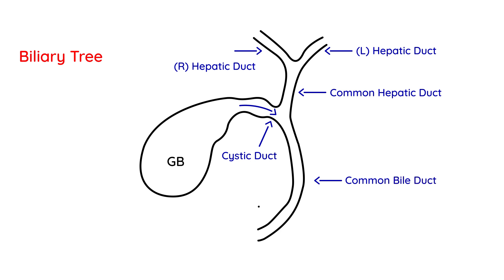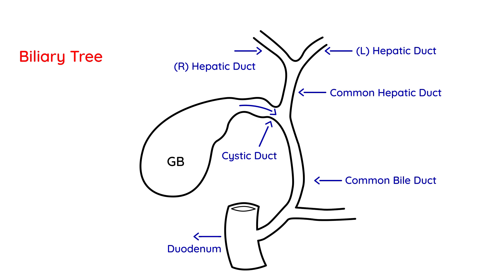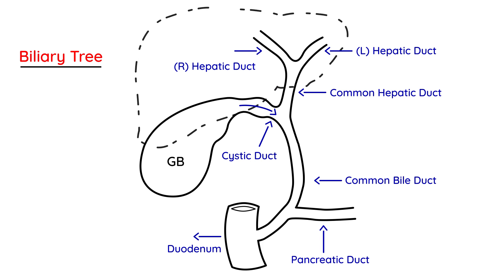The common hepatic duct and cystic duct join to form the common bile duct, which enters the duodenum at a specific point. One other duct joins with the common bile duct: the pancreatic duct. All these ducts make up the biliary tree. The liver sits up here in the silhouette.